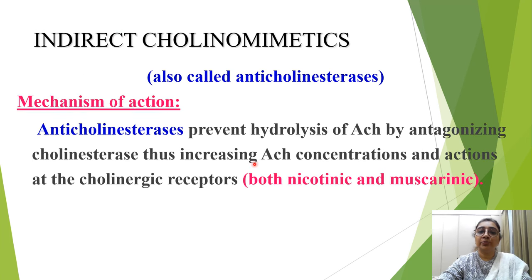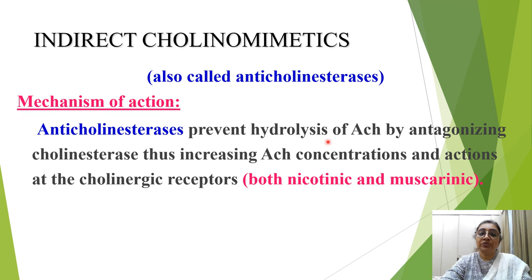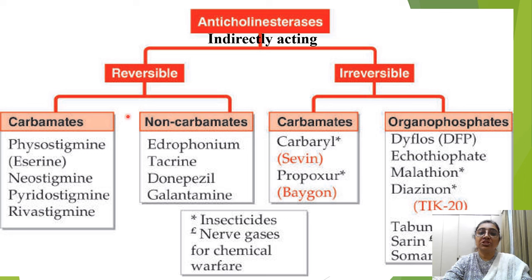The second group of cholinomimetic drugs is the indirectly acting cholinomimetics, also called anticholinesterases. Their mechanism of action is to prevent hydrolysis of acetylcholine by inhibiting the enzyme cholinesterase present at the synaptic cleft, thereby increasing acetylcholine concentration and its action at both nicotinic and muscarinic receptors. These are classified as reversible and irreversible.